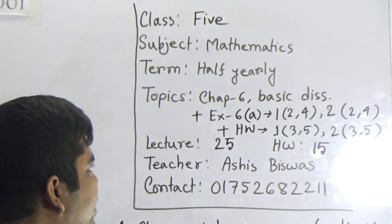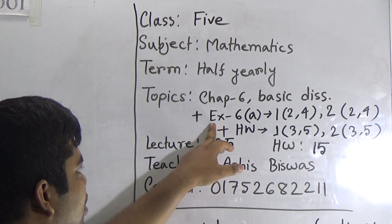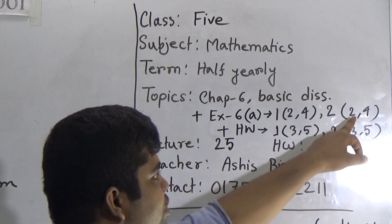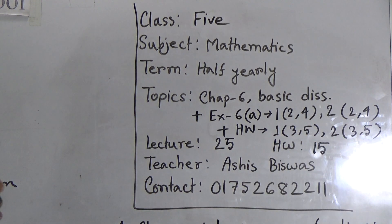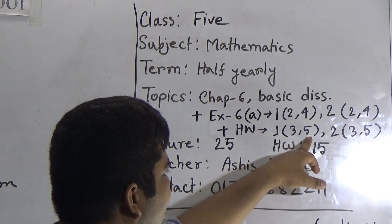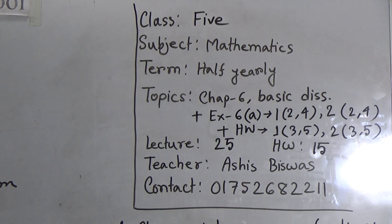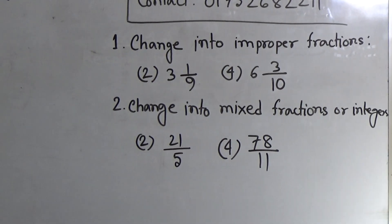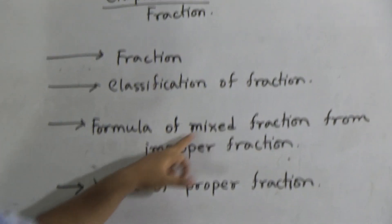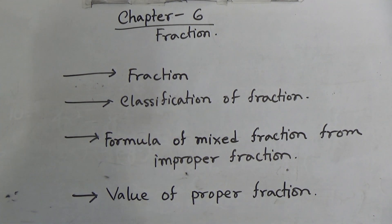Today's HW number will be 15. Our today's topic is Chapter 6, basic discussion. From exercise 6A we shall solve 1.2.4 and 2.2.4 as your CW, and from the same chapter, same exercise, 1.3.5 and 2.3.5 will be your HW. From this class we shall learn the definition of fraction, classification of fraction, formula of mixed fraction from improper fraction, and value of proper fraction.